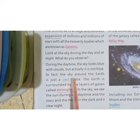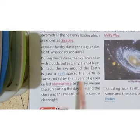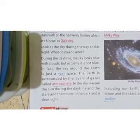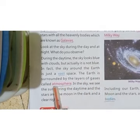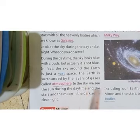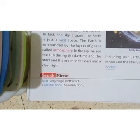During daytime the sky looks blue with the clouds, but actually it is not blue — the sky around the earth is just vast space, it is not blue in color. The earth is surrounded by layers of gases called the atmosphere. In the sky we see the sun during daytime and stars and moon clearly at night. Celestial bodies means heavenly bodies.